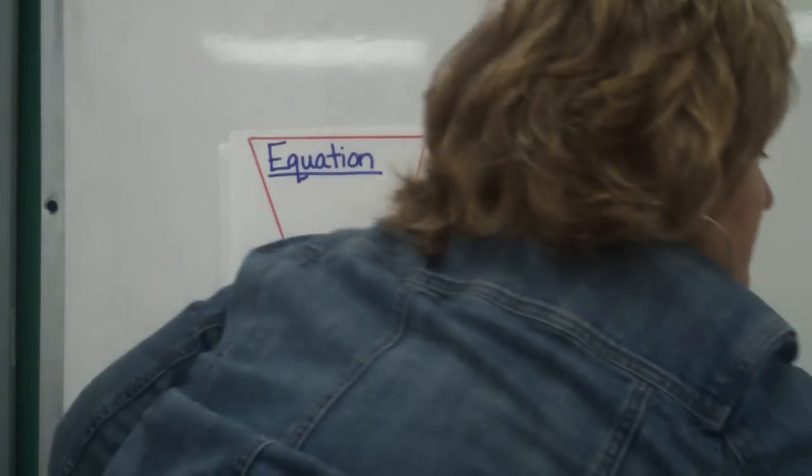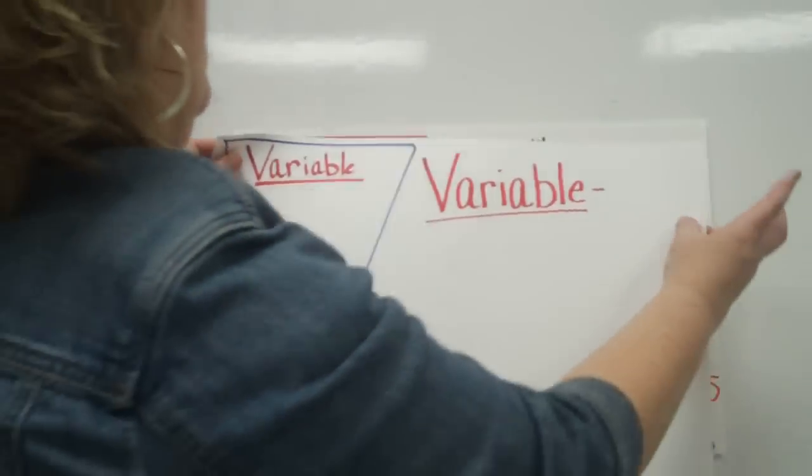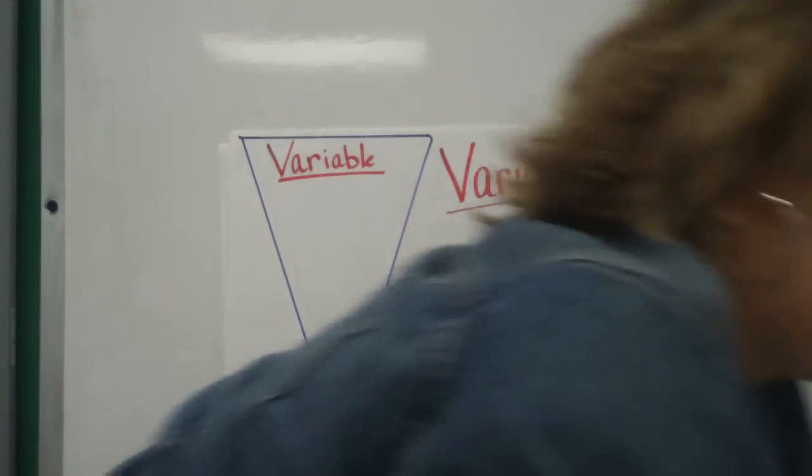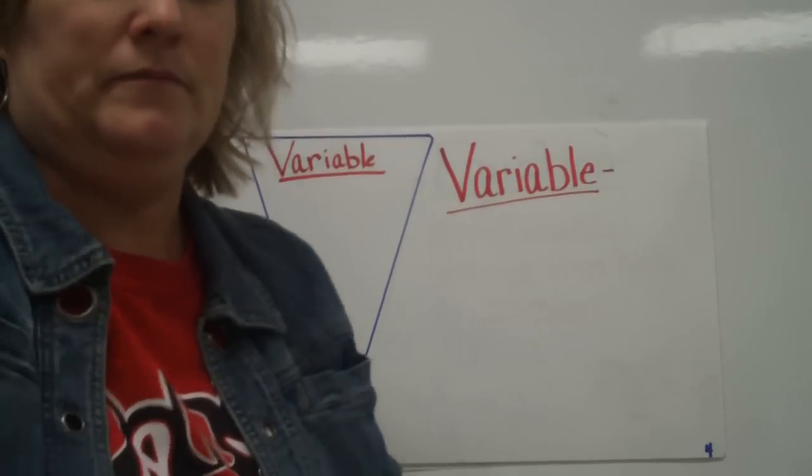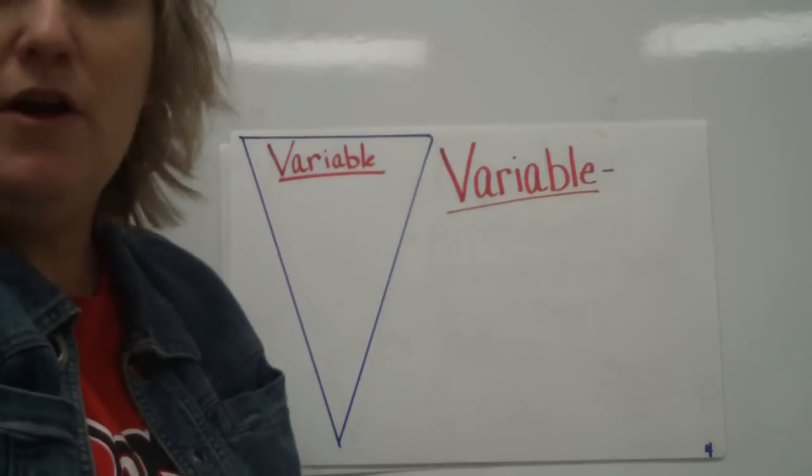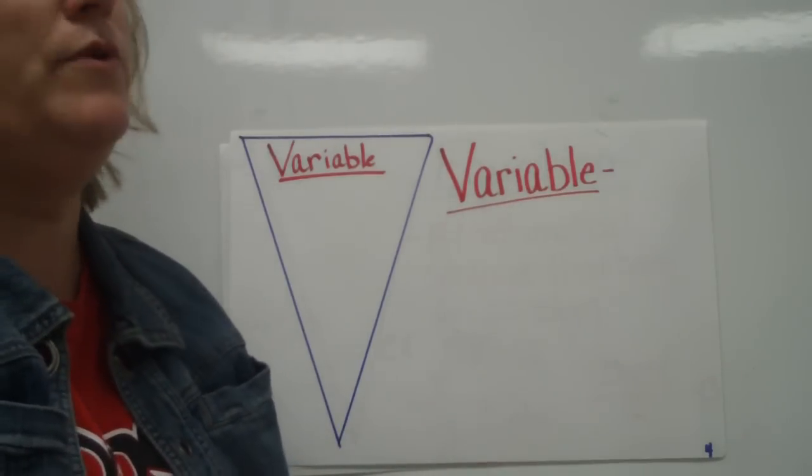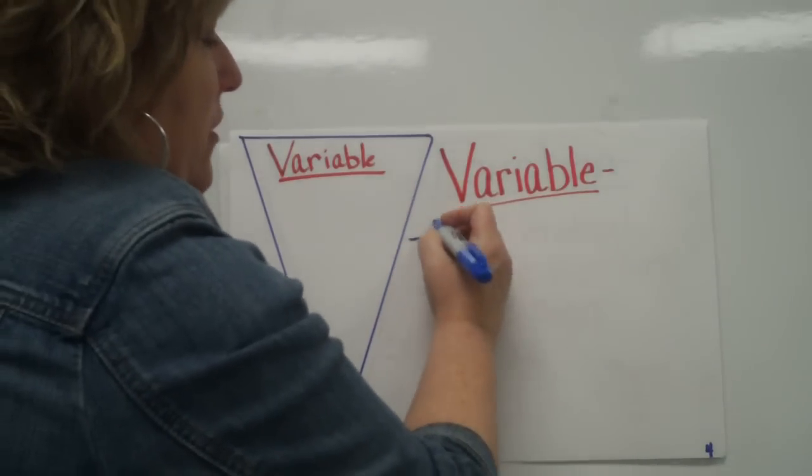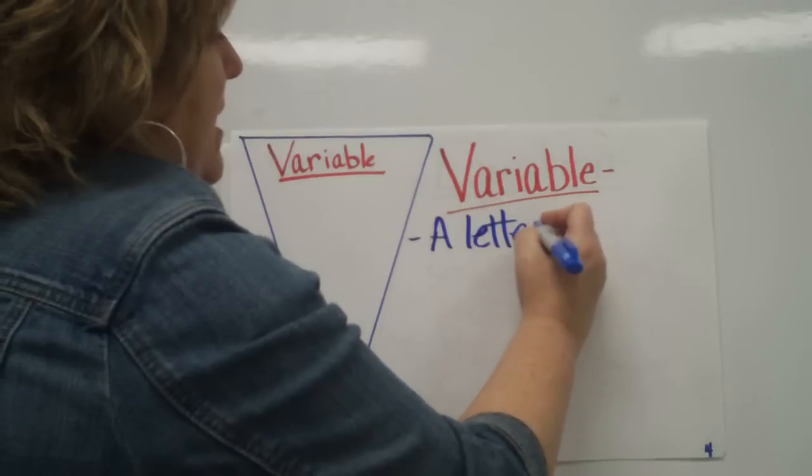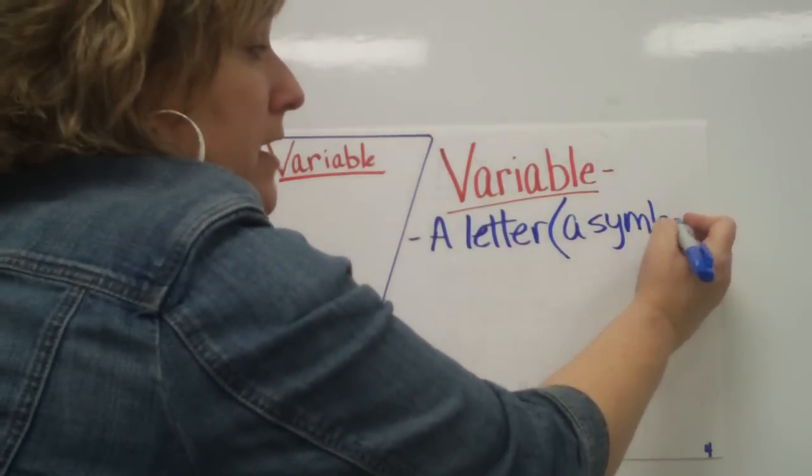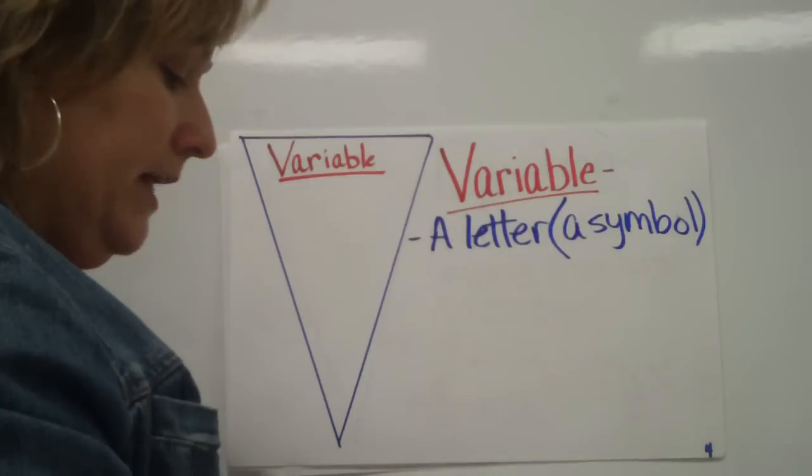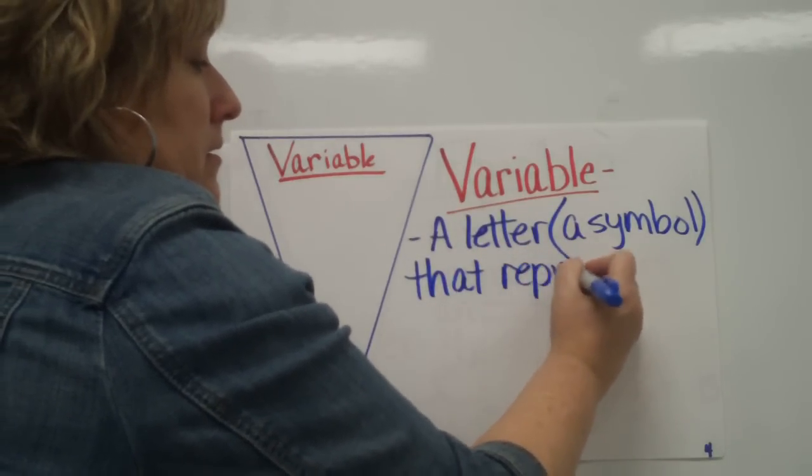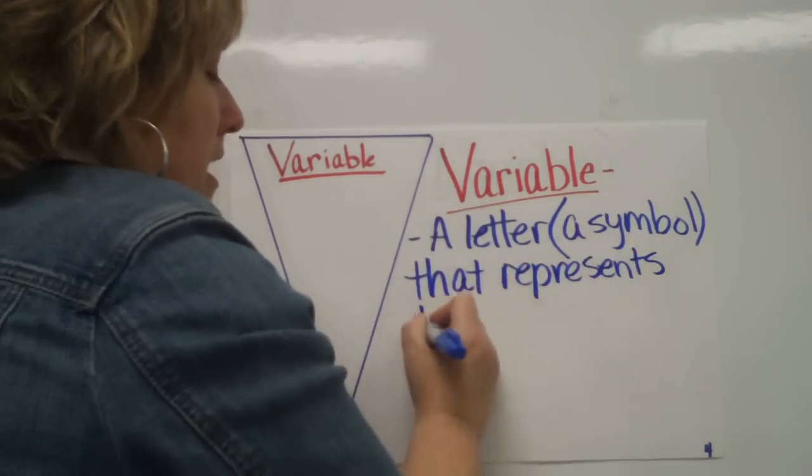The next one that we'll do is variable. Go ahead and put that in your piece of pie. Again, this is one you learned in sixth grade - just a review to make sure we're all on the same page. A variable is just a letter, and sometimes it can be a symbol - you don't often see it that way, but sometimes it will be a symbol - a letter or symbol that represents the unknown amount.